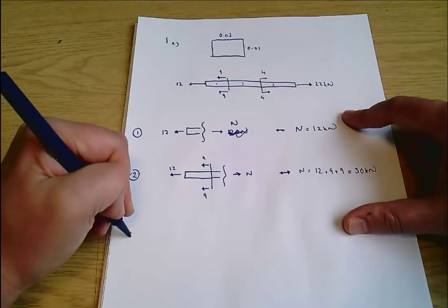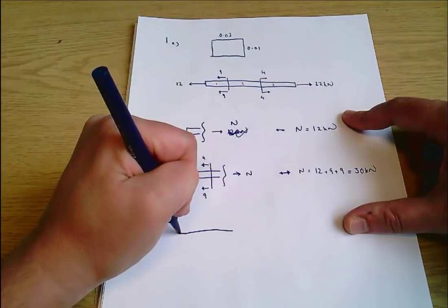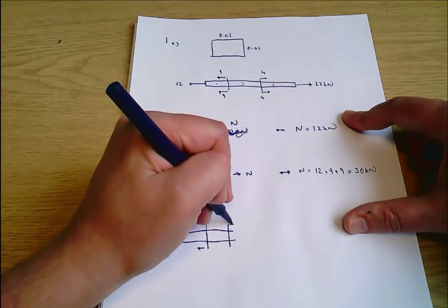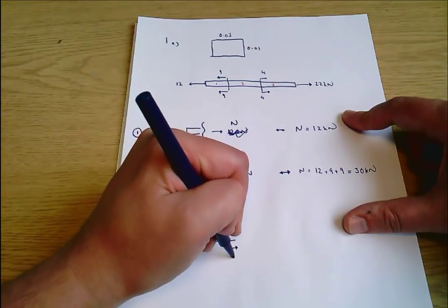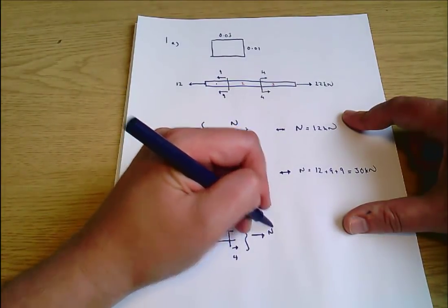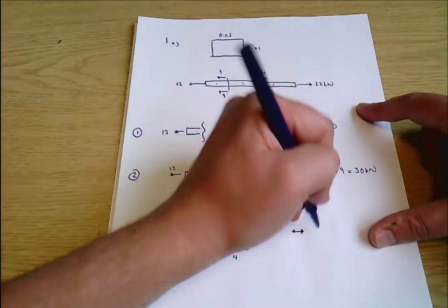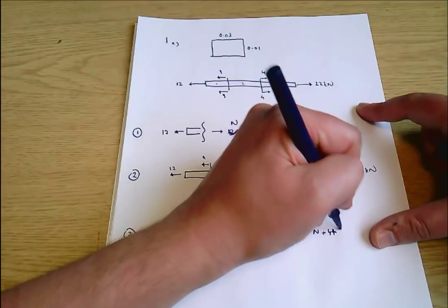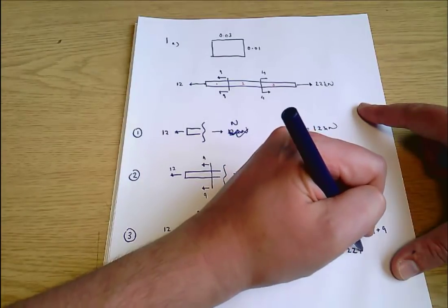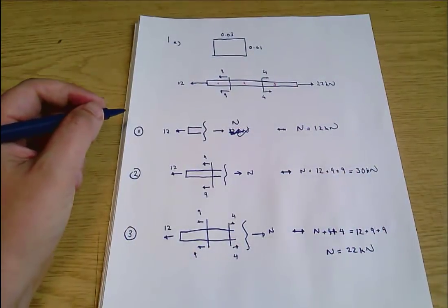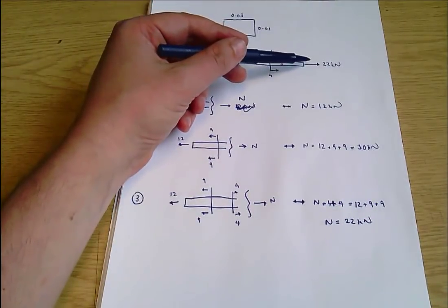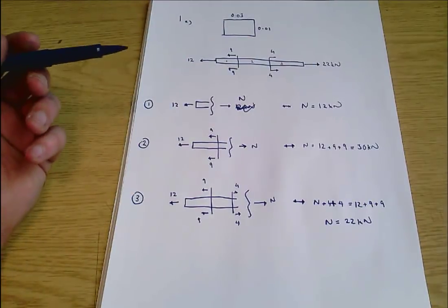In section 3, using horizontal equilibrium, N plus 4 plus 4 equals 12 plus 9 plus 9, so N equals 22 kilonewtons. The normal force within the bar equals 22 kilonewtons, and that's good because the tension in the bar will be exactly balanced by the 22 kilonewtons on the right-hand edge.